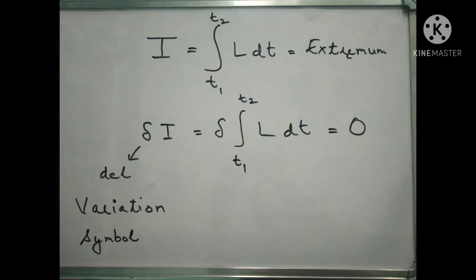Now we apply the variation symbol, which is del (δ). When we apply del to the integral, we write: δI = δ∫(t1 to t2) L dt. The Lagrangian is extremum — that means it is constant. When we differentiate a constant, the answer is zero. So when we apply del variation to Hamilton's Principle, the answer comes out to be δI = 0. This clearly indicates that the Lagrangian is stationary — extremum — for the path followed by the system.